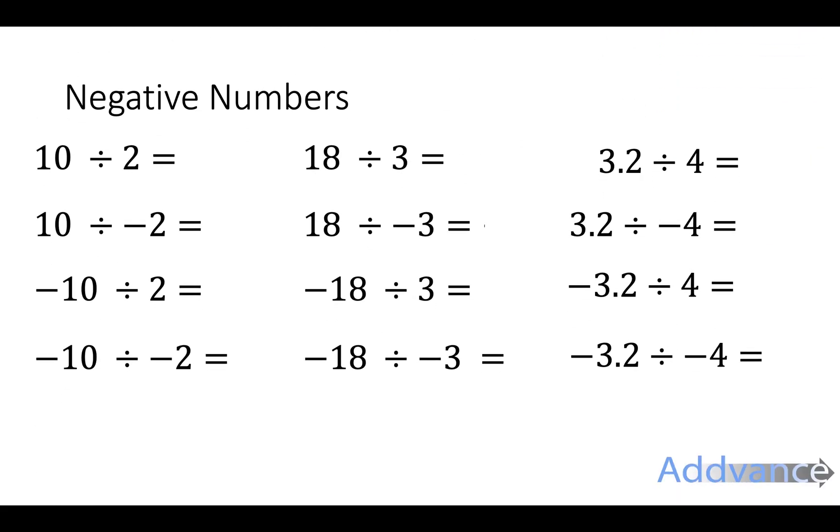Now, for dividing negatives. We have 10 divided by 2 is 5, so the rule follows. And it also works with decimals. 3.2 divided by 4 is 0.8. 3.2 divided by minus 4 is minus 0.8. Minus 3.2 divided by minus 4 is a negative divided by a negative, which is a positive.